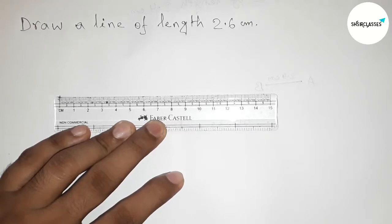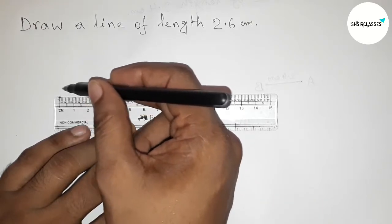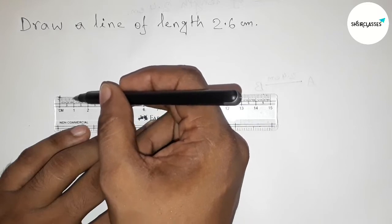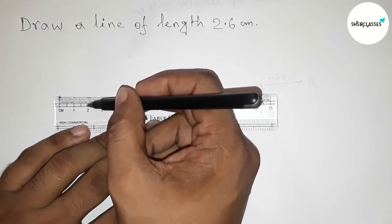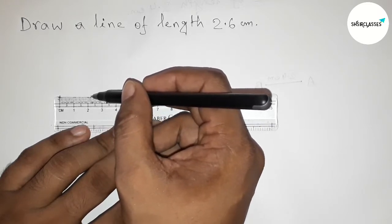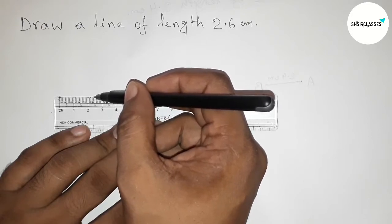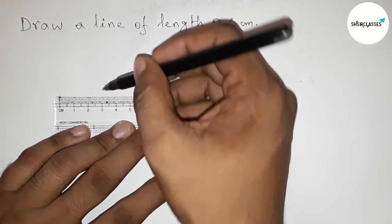Next, counting the 2.6 centimeter. So this is one centimeter, this is two centimeter, and this is 2.1, 2, 3, 4, 5, and this is 2.6. So this is 2.6 centimeter distance or length.